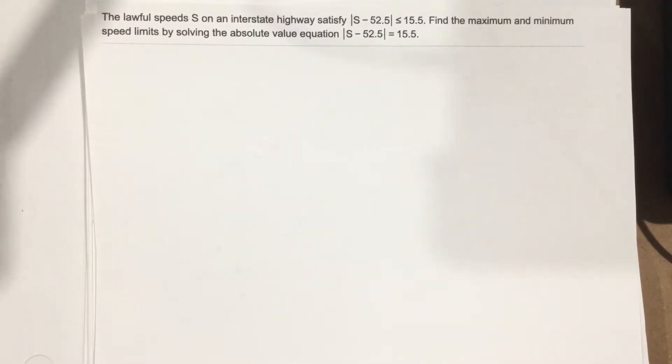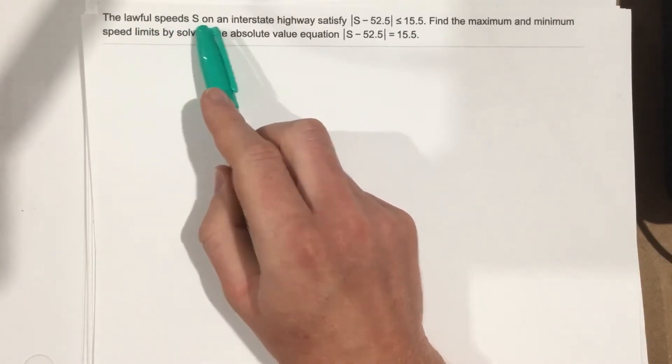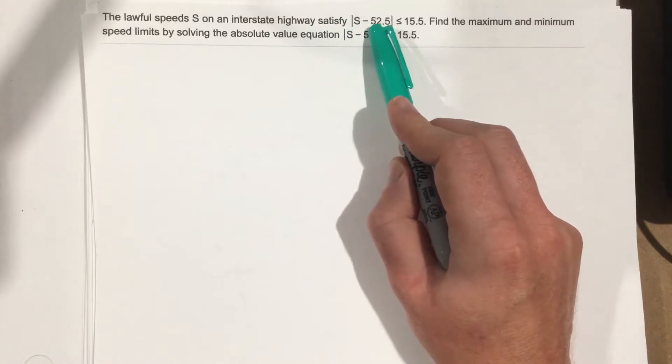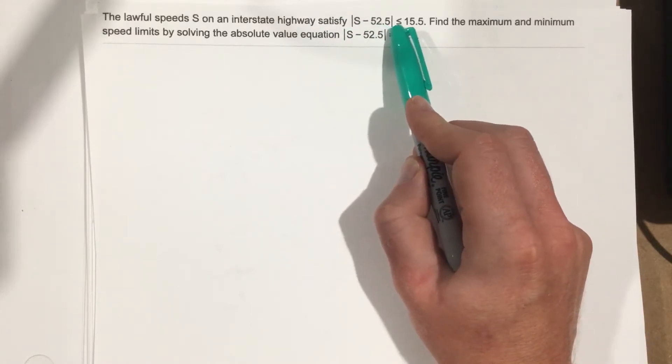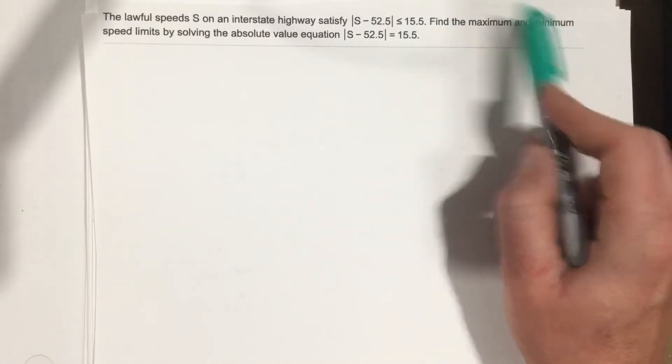This is problem number seven from section 2.5. It says the lawful speeds s on an interstate highway satisfy the absolute value of s minus 52.5 less than or equal to 15.5. Find the maximum and minimum speed limits by